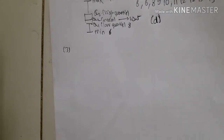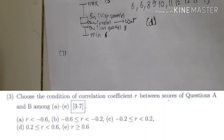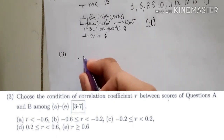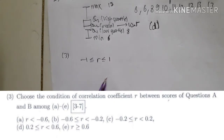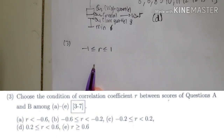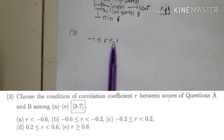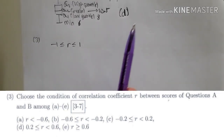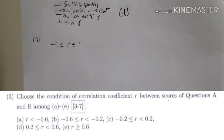For number three, we need the correlation coefficient r. The value of r is always between −1 and 1, inclusive. With that in mind, option A (r less than −0.6 extending to negative infinity) and option E are not suitable, as they fall outside this interval.